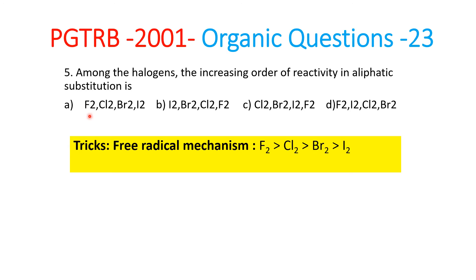So free radical means the fluorine free radical is very small in size and is more stable compared to iodine. Iodine is bigger in size.